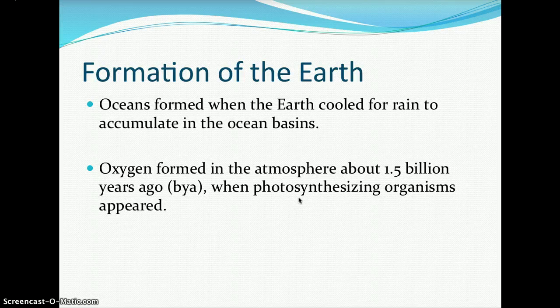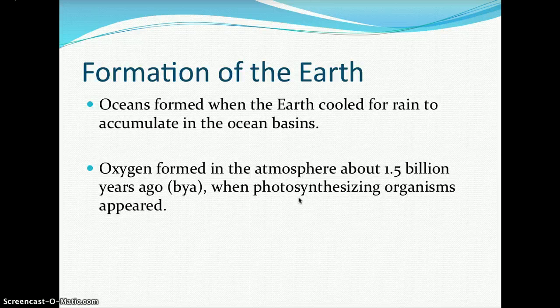As Earth continued to cool, our oceans formed when the Earth cooled enough for rain to accumulate in the ocean basins. It's suggested that water on Earth came from comets bombarding Earth in its earlier formation. Oxygen formed in the atmosphere about 1.5 billion years ago when photosynthesizing organisms called photoautotrophs appeared — small, minute photoautotrophic bacteria in our earlier oceans, because at this time we did not have land plants.